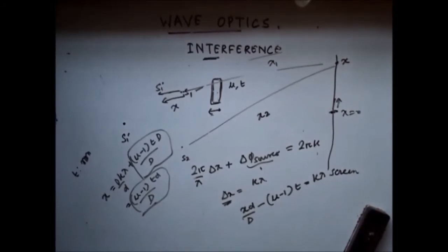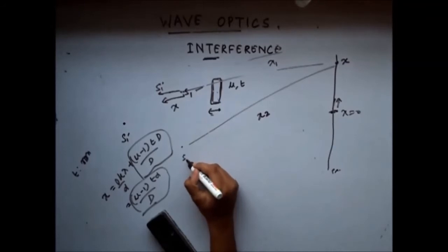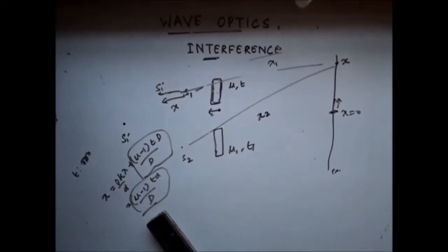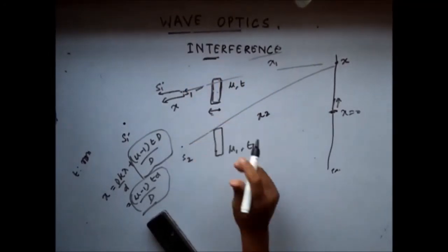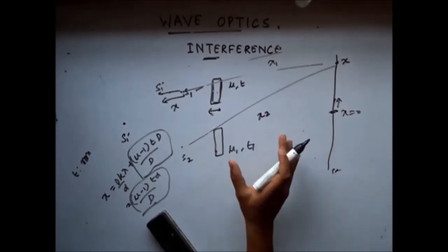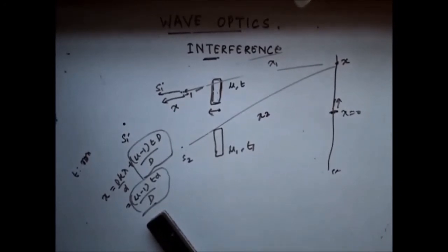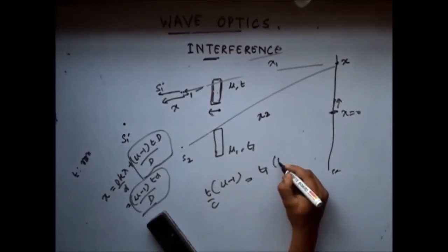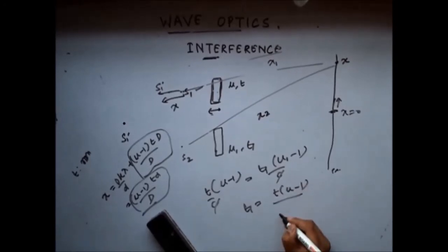Now, what if I want to get my setup back? I can introduce another glass slab in front of the second source with refractive index mu1 and thickness t1, so that the interference pattern is brought back. This glass slab introduces a time delay, and I should ensure that the second glass slab introduces the same amount of delay so the two delays cancel each other. The time delay of the first slab is (mu minus 1)·T by C, and this should equal (mu1 minus 1)·t1 by C. So the thickness of the second glass slab should be t·(mu minus 1) divided by (mu1 minus 1).